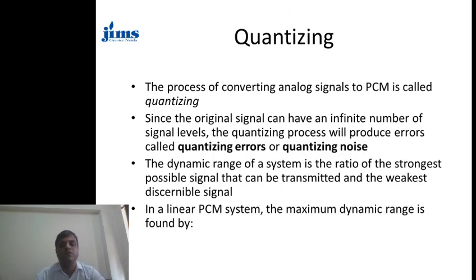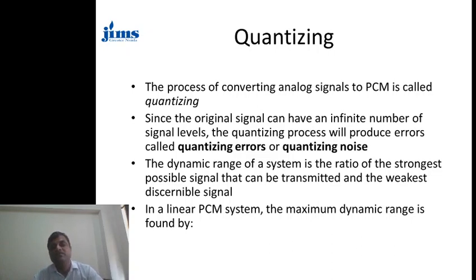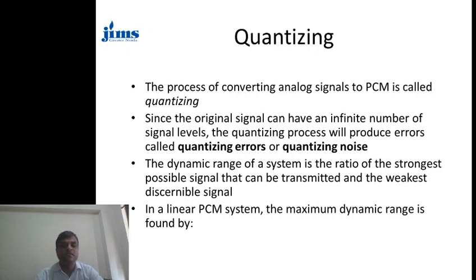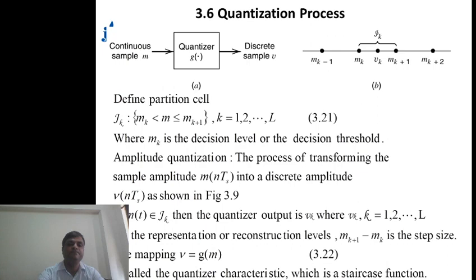The first process used for converting an analog signal into a digital signal is quantization. Quantization is the process of converting an analog signal into PCM and is called quantizing. Since the original signal cannot be divided into an infinite number of signal levels, the quantization process produces an error called quantization error or quantization noise. The dynamic range of the system is the ratio of the strongest possible signal to the weakest discriminable signal. In a linear PCM system, the maximum dynamic range is bounded by a specific equation.